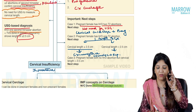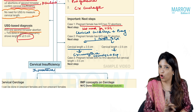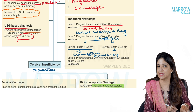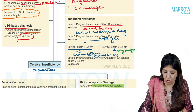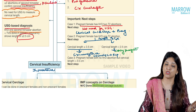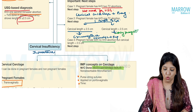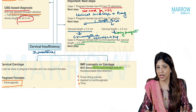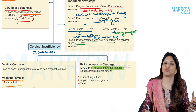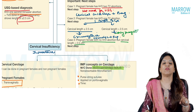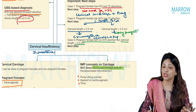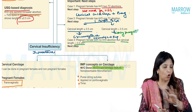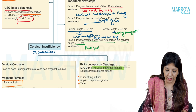If the length of the cervix is more than 2.5 cm but there is a history of one second trimester abortion, you do not do cerclage. Cerclage requires either two second trimester abortions or one second trimester abortion with cervical length less than 2.5 cm. In this case, give only progesterone. If there is no history of abortion but cervical length is less than 2.5 cm, treat it as an incidental finding — no surgery, only progesterone.